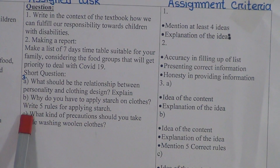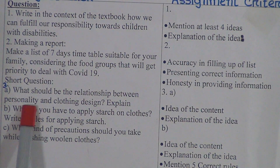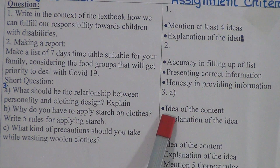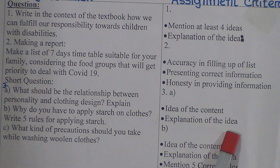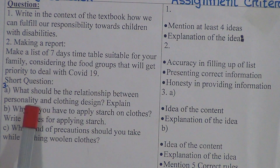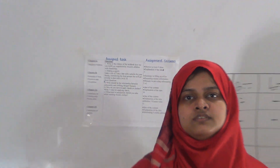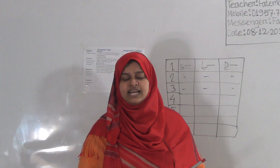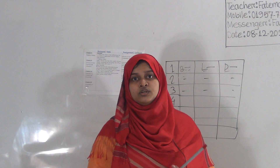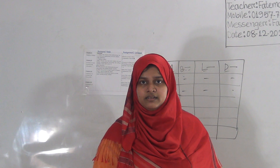Next are short questions — question three, divided into A, B, and C. Question A is: what should be the relationship between personality and clothing design? Explain. The criteria is idea of the content and explanation of the idea. You have to write the relationship between personality and clothing design.